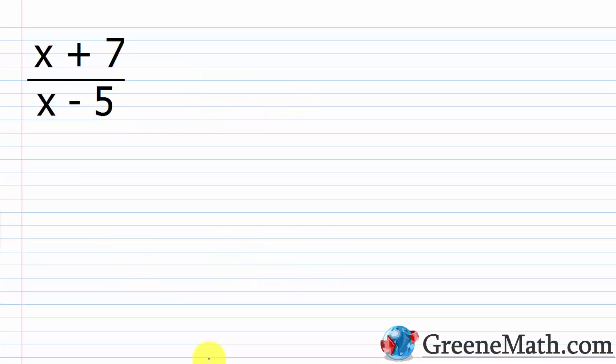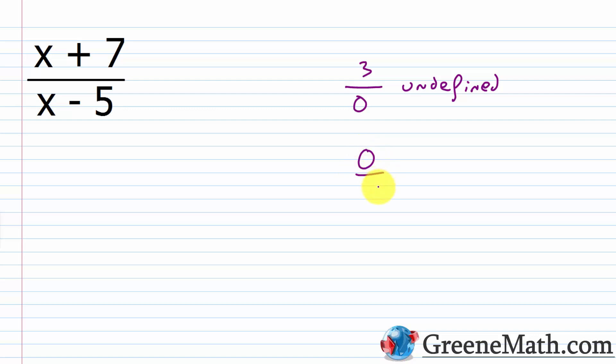When you start working with rational expressions, the first topic you come across is how to find the restricted values. This topic deals with division by zero. We know that we're not allowed to divide by zero — if we have division by zero, it's considered undefined. So something like 3 over 0 is undefined. When you divide zero by a non-zero number you get zero, so zero divided by 3 is zero. But if you try to divide by zero, it is undefined.